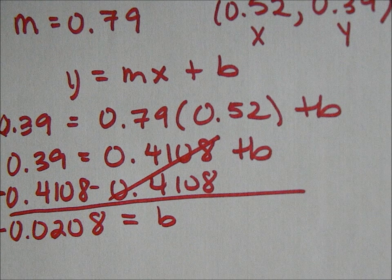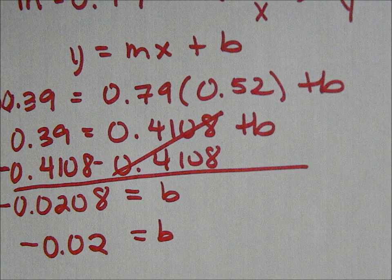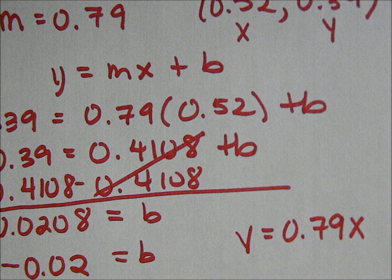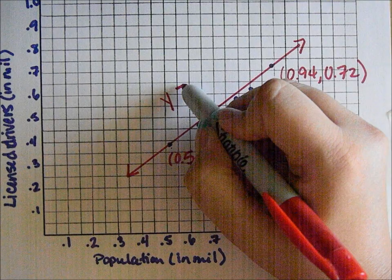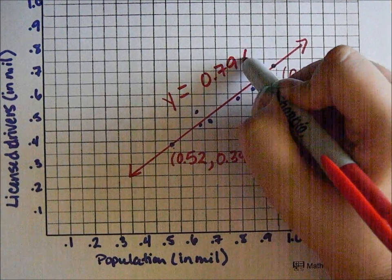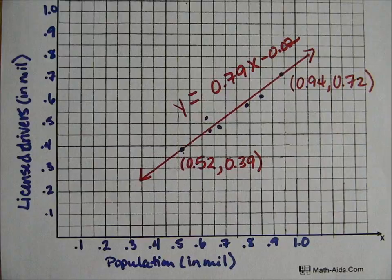Once you have your b value, plug the slope and the b values together into the equation. That gives you the equation of the line in slope-intercept form: y = mx + b. Once you are done, you have found the line of best fit for that specific data.